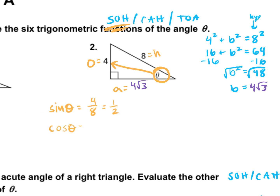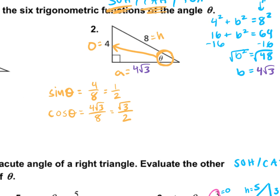Now cosine is adjacent over hypotenuse, so that's 4 square root 3 over 8. We can simplify the 4 and 8 by dividing both by 4, giving us square root 3 over 2. Then tangent is opposite over adjacent: 4 over 4 square root 3, which simplifies to 1 over square root 3. We can't leave a square root in the denominator, so we rationalize — multiply top and bottom by square root 3 — giving us square root 3 over 3.